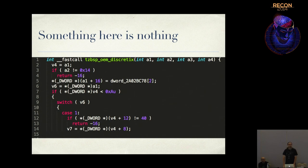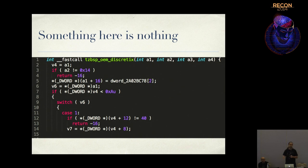Looking around in TrustZone, we find the OEMDiscretics function. There may be a vulnerability here - on about the fifth line, they're doing something not great. All of those parameters are attacker controlled. You can provide any address you want - secure memory, insecure memory, anything - and for that address plus 16, it writes the value from a global flag. It's pretty bad. Not terrible depending on what's at that global flag, but this is the building block for the exploit moving forward.